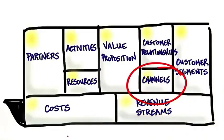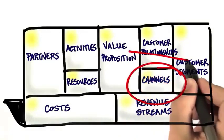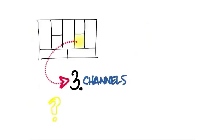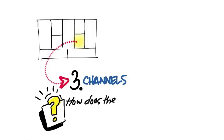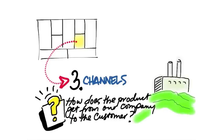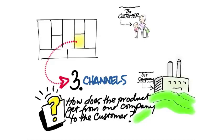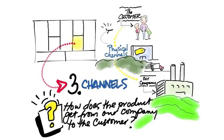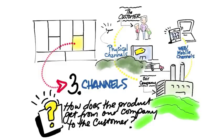The next piece is channels. How does your product get to your customers? We use distribution channels for that. Pre-1990s, the only channels to reach a customer were physical — you went to a store, had salespeople, physical distribution. But since the mid-1990s, we now have virtual channels: the web, mobile, cloud. The first question to ask is how will I be selling and distributing my products — through physical channels or web/mobile?